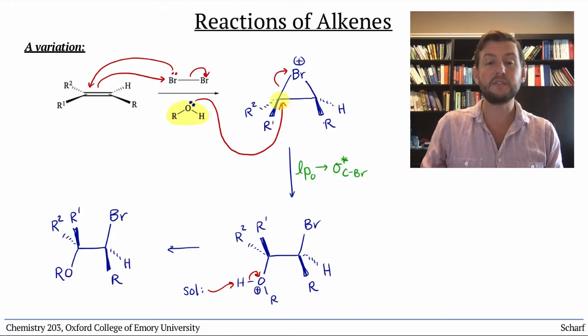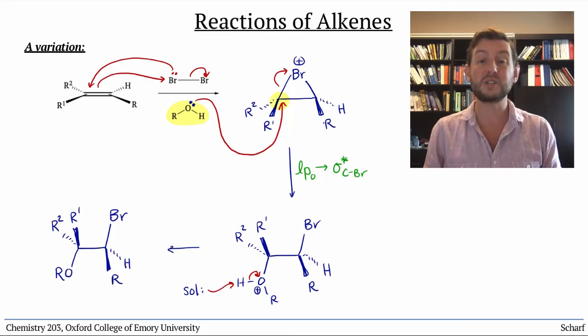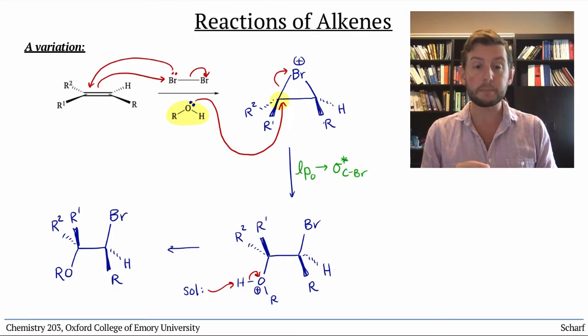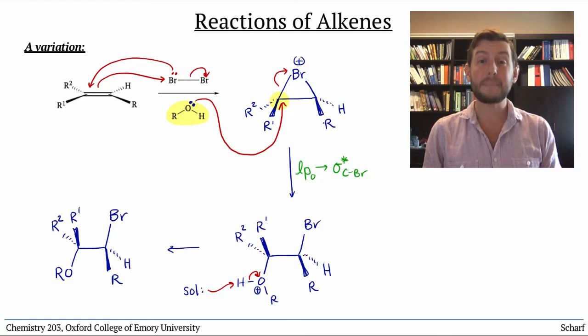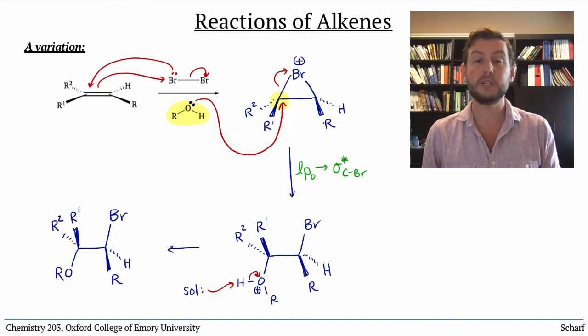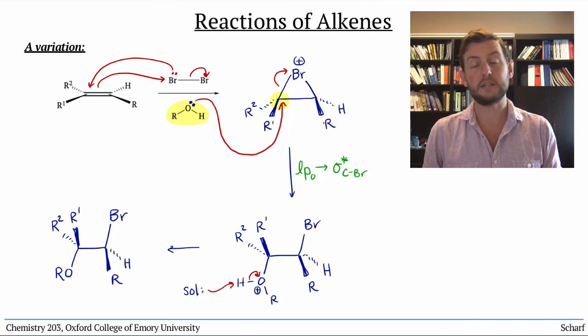You'll notice that I had the solvent attack this σ* CBr at the more substituted side of the bromonium ion. I did this on purpose. This reaction is regioselective as well. It turns out that positively charged three-membered rings, like bromonium ions, are opened by attack at the more substituted site. We'll explain the reasons for this in a future video.